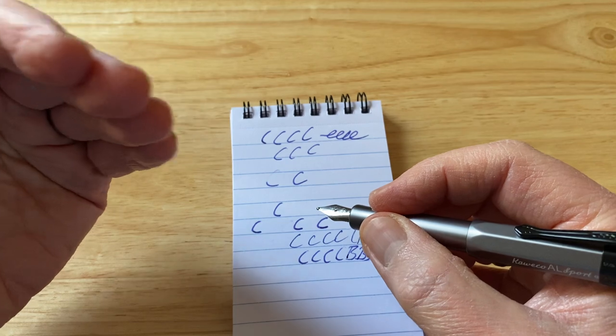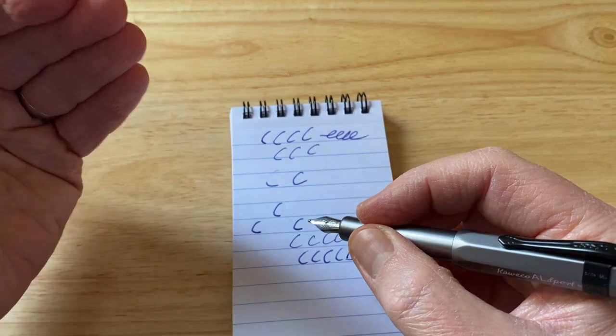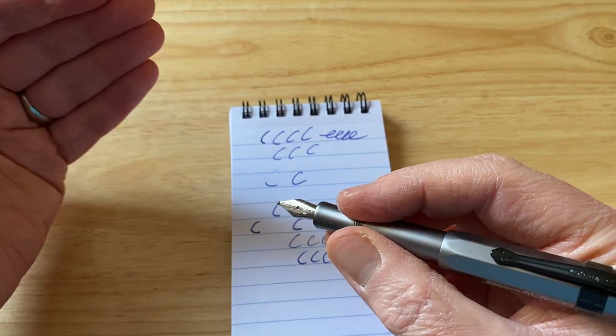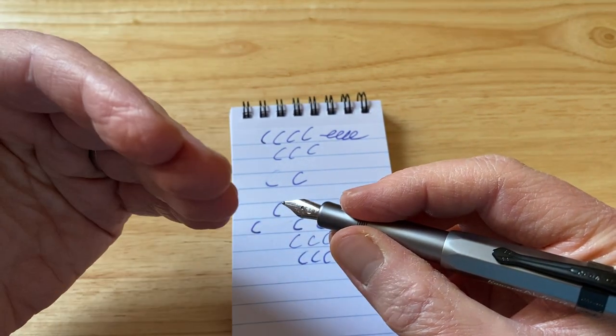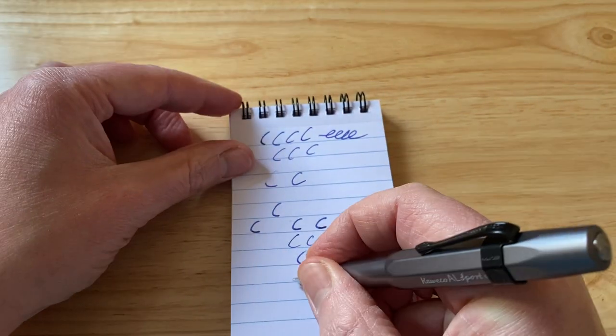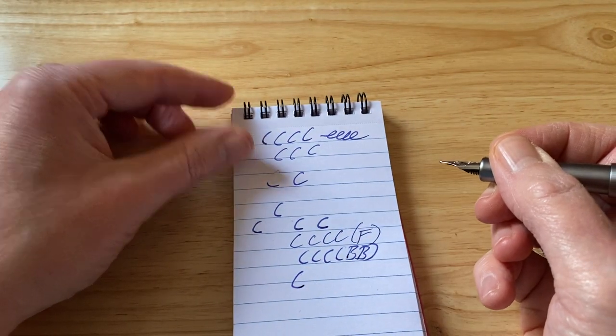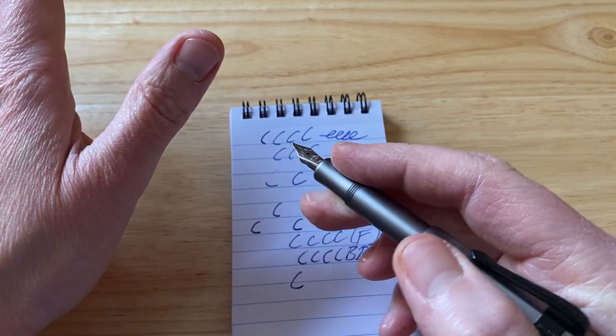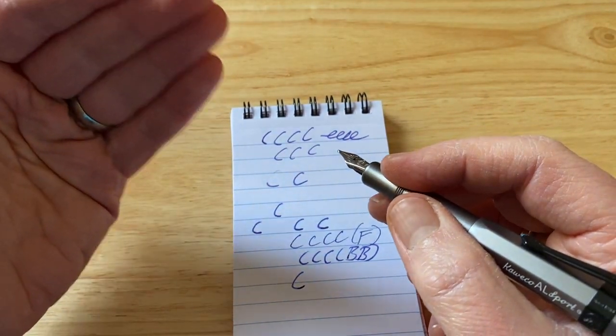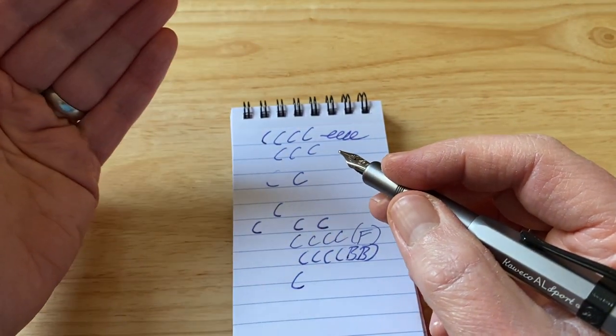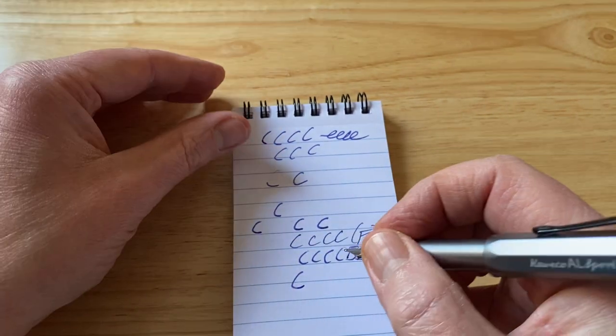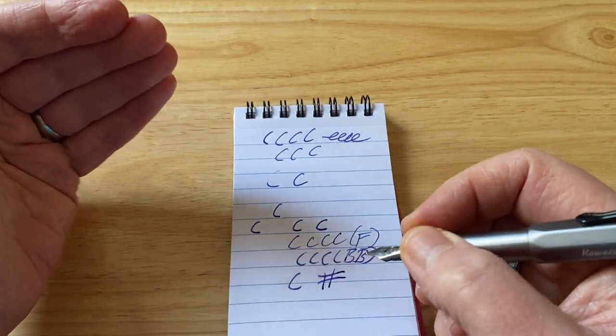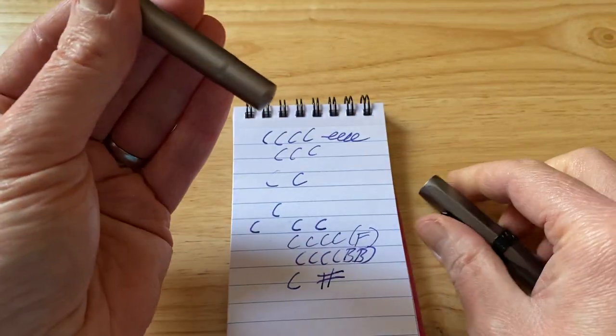And, it is a shame that I find that the fine, extra fine, and medium nibs on Caveco pens are excellent. Really, really good. But, as soon as you get into the broad and double broad territory, they can be a bit hit and miss. Which is a real shame because I love these pens other than that. And, to be honest, the medium nibs are broad and wet enough for most people's purposes, including my own. So, I don't really need double broad for these fountain pens.